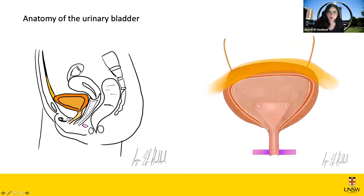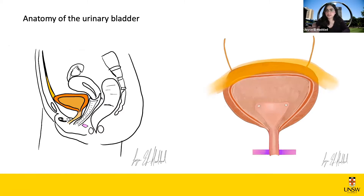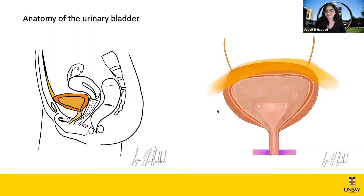Looking at the gross anatomy of the urinary bladder, we have two diagrams. First, a mid-sagittal diagram of the pelvic cavity — meaning we've divided the pelvis into equal right and left and are looking at one side only. The front is anterior and the back is posterior. We notice reproductive organs are present here — this is a female pelvic cavity. Starting from the posterior aspect and moving anteriorly: we have the sacrum, a triangular-shaped bone at the back.